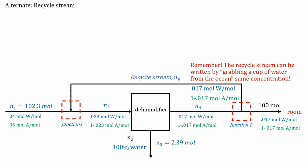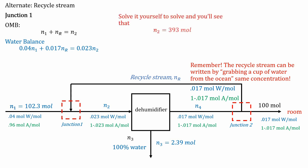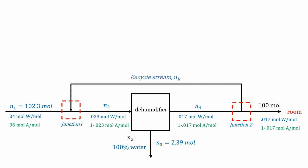So now we can do mass balance on junction one. So what's coming in for the overall mass balance, set it equal to what's coming out. So the first stream plus the recycle stream, the out stream, and do the same thing for water balance. So we have two equations and two unknowns, just like before. And solve it for yourself, and you'll see that we'll get the same thing for n_2 is 393. And the recycle stream, the final answer is 290 moles. And that's it.